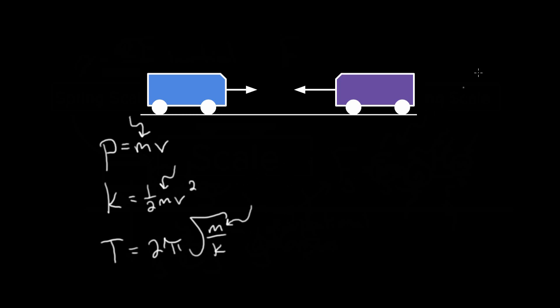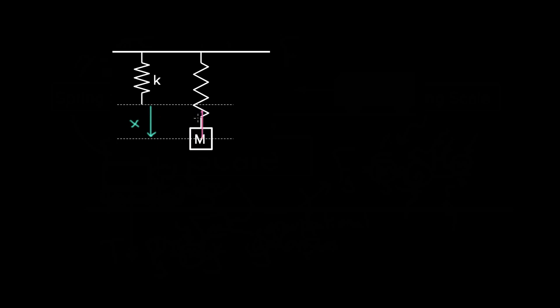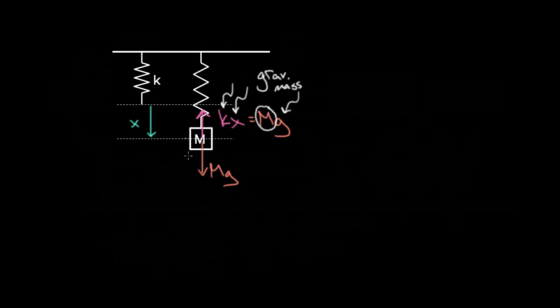If you're clever, you could do a single experiment with two phases and get both masses at once. For instance, take a spring of known spring constant, hang a block on it, and lower it gently until it hangs at equilibrium. Measure how much it stretched. At that position, the spring force kx must equal the gravitational force mg. So kx = mg — if the spring constant is known, you measured x with a ruler, and you know g is 9.8 on Earth, then solving for m gives you the gravitational mass.